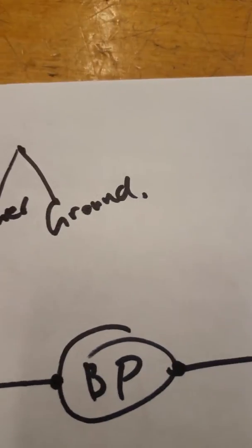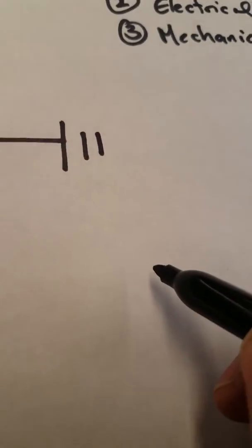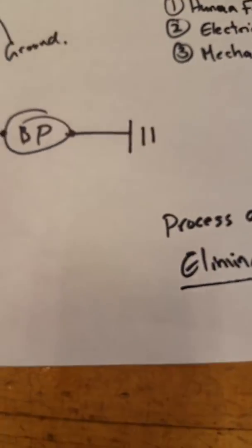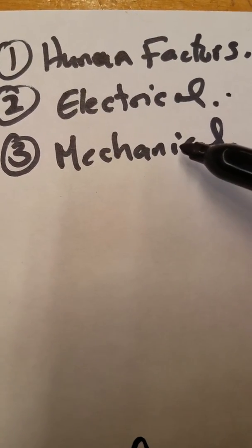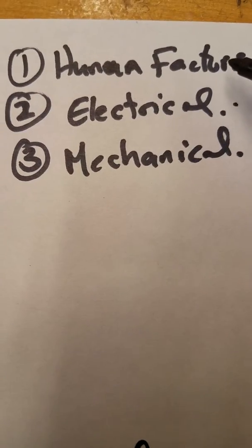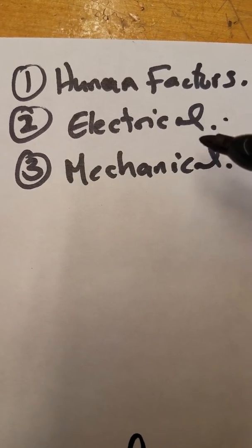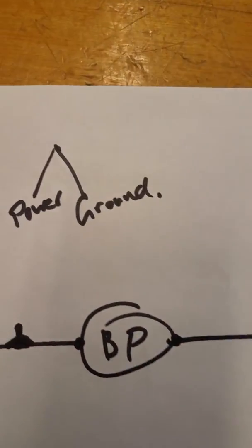So what does troubleshooting really mean? In my opinion, troubleshooting is simply this: process of elimination — that's it. You start with human factors, then move on to electrical, then check mechanically. You can observe human factors directly, electrical you'll need a multimeter to find out what's going on, and mechanical — well, if you have human factors and electrical ruled out, the only possibility is mechanical.